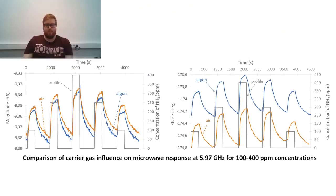The first two results are obtained at 5.97 GHz for ammonia concentrations going from 100 to 400 ppm. The figure on the left shows the magnitude as a function of time. Ammonia concentration is also indicated on the secondary y-axis.